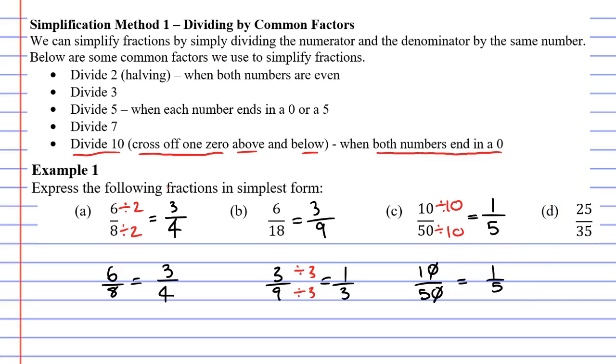Let's now move on to question D. This time we have 25 over 35. They are not both even, so we can't divide by 2. They don't both end in a 0, so we can't divide by 10. But, if we look here, it says when each number ends in a 0 or a 5, we can divide by 5.